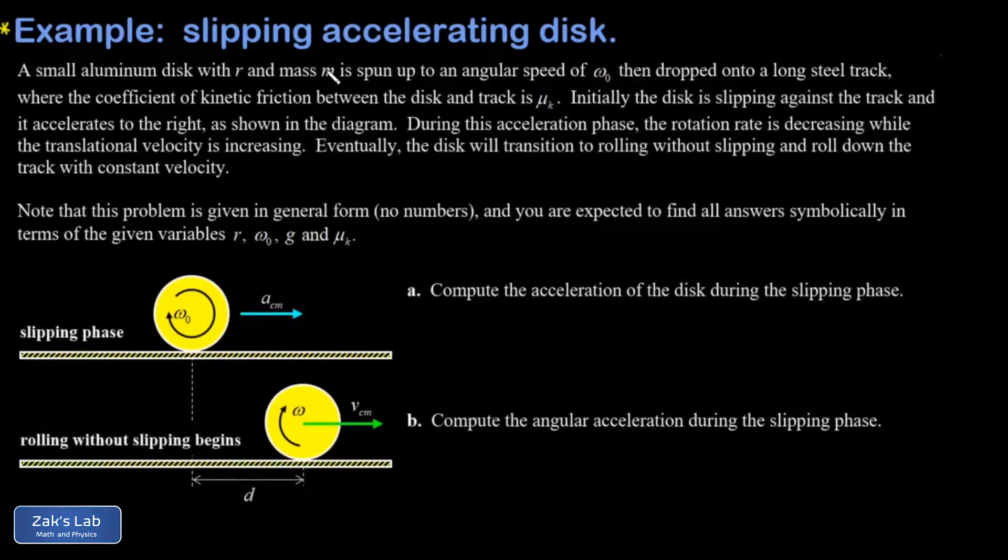So what's happening in this problem is I take a disk of mass m, and I spin it really fast with some initial angular velocity of ω₀. And then I drop this thing onto a track, and it begins to slip. So if you drop this disk spinning at a high rate onto the track, it's just going to skid for a while.